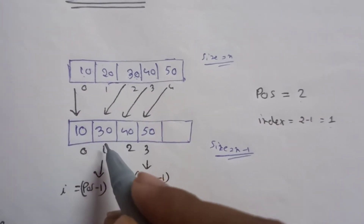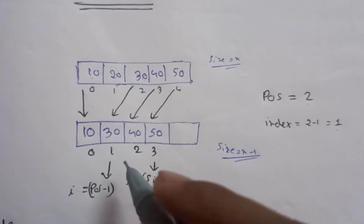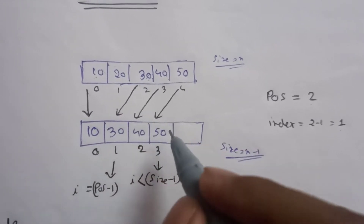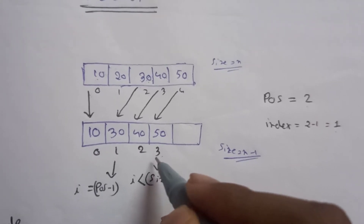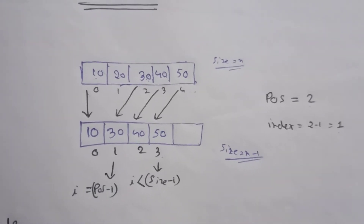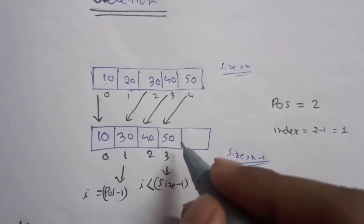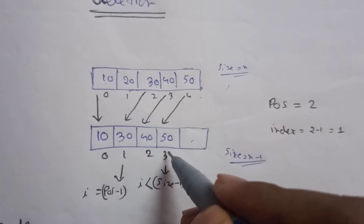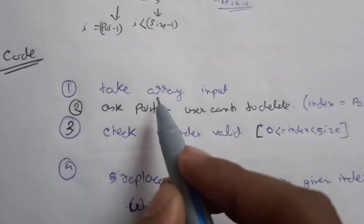The shifting starts from the index we are deleting, which is position minus one. In the for loop, i starts from position minus one. The shifting continues up to i less than size minus one — not i less than size — because there is no next element to shift into the last position. So the shifting always occurs up to i less than size minus one.